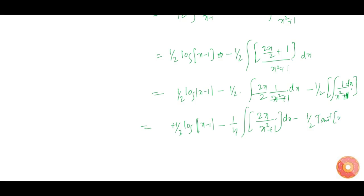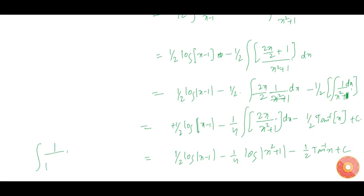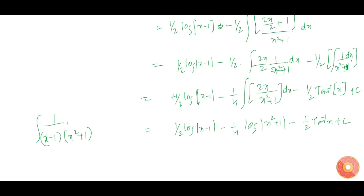This gives tan inverse x plus c. We can write 2x as d of (x squared plus 1), so the integration of 2x over (x squared plus 1) dx becomes log mod(x squared plus 1). Therefore, integration of 1 divided by (x minus 1) into (x squared plus 1) is equal to 1 by 2 log mod(x minus 1) minus 1 by 4 log(x squared plus 1) minus 1 by 2 tan inverse x plus c.